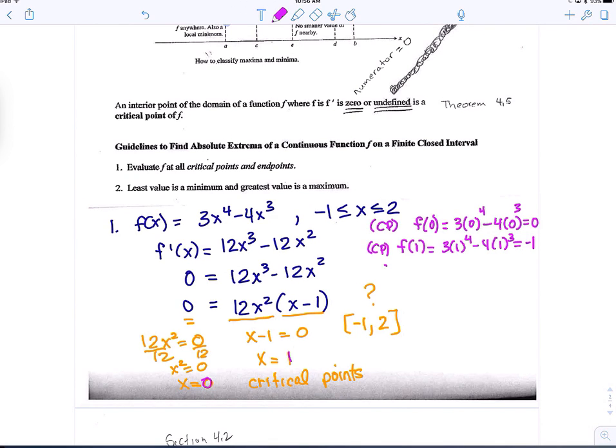The other thing you evaluate is an end point. Okay, so one of the end points is negative 1. So I want to evaluate f of negative 1. And the other end point is going to be 2. So evaluate f at 2. Go ahead and get those two calculations.